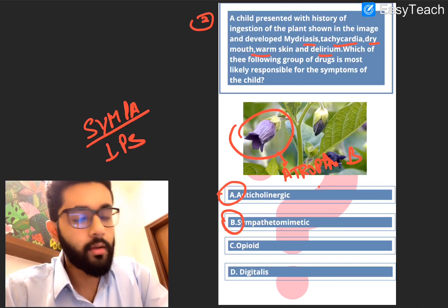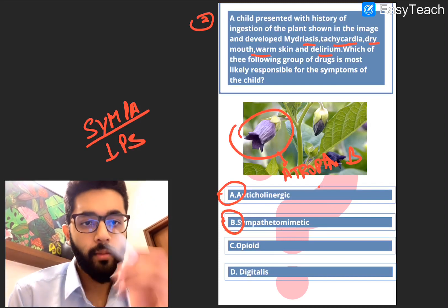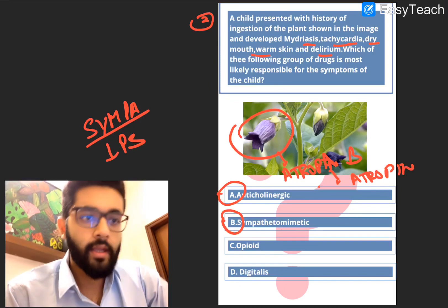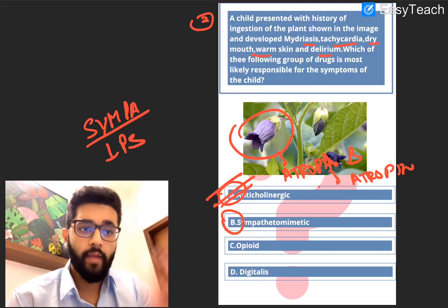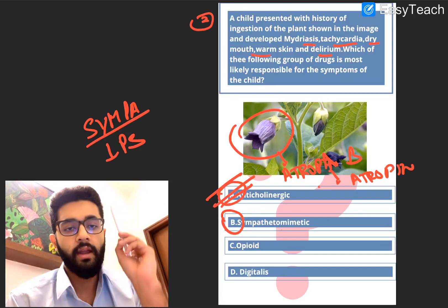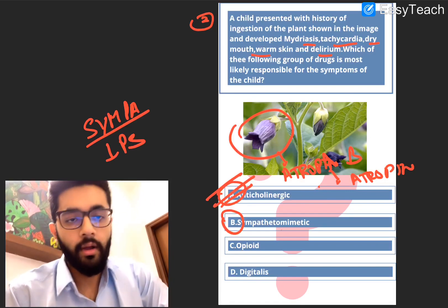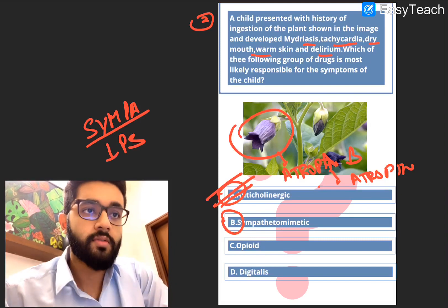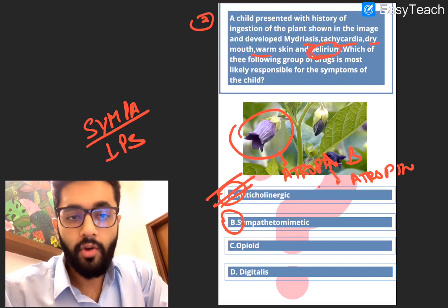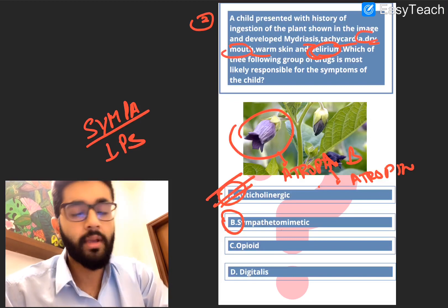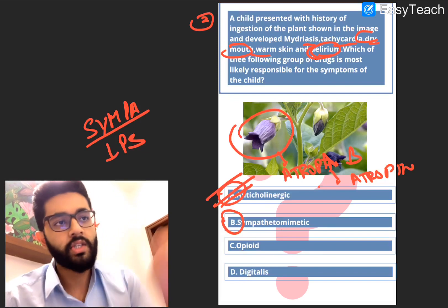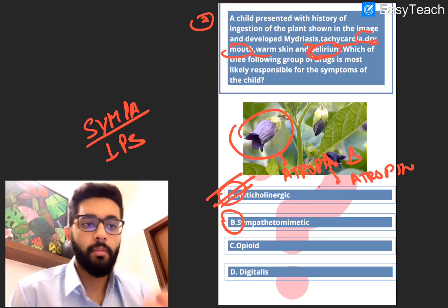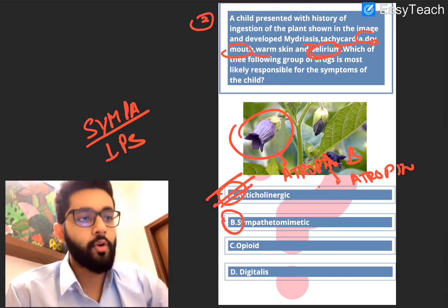Here is where the toxicology and the picture come into play. This plant is none other than atropa belladonna — that is the plant from which we obtain atropine. The drug is obviously atropine, and atropine is an anticholinergic agent. So the answer is A, anticholinergic agent. There is one more reason to pick anticholinergic over sympathomimetic even without the image: the history of dry mouth, warm skin, and delirium. In anticholinergic overdose, there is altered consciousness — delirium — and dry mouth or xerostomia. These point more towards an anticholinergic drug rather than a sympathomimetic.